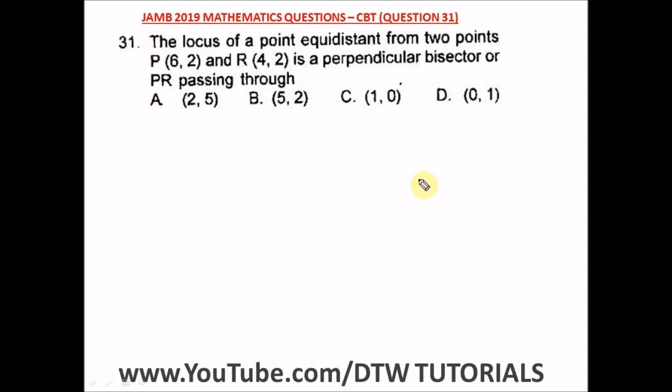Question 31 of the JAM 2019 mathematics past question, your UTME CBT exam, says the locus of a point equidistant from two points P and R is a perpendicular bisector of PR passing through. We're looking for the point.